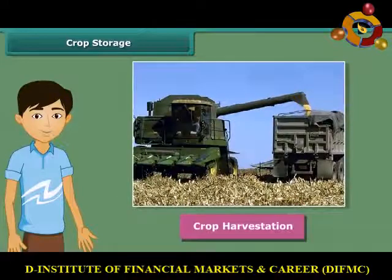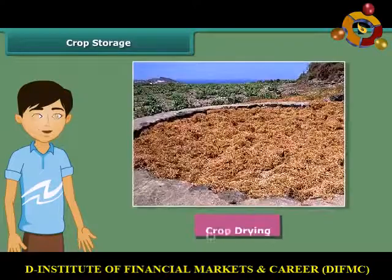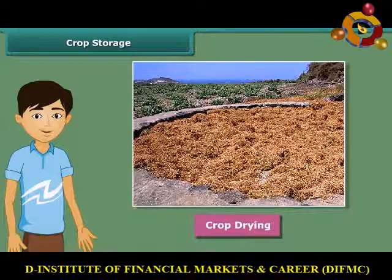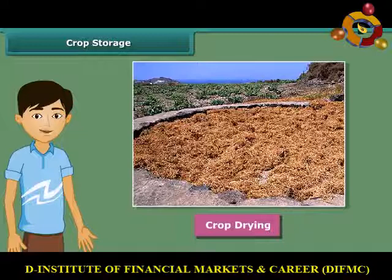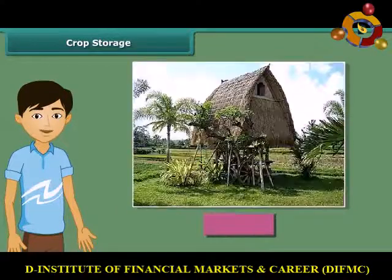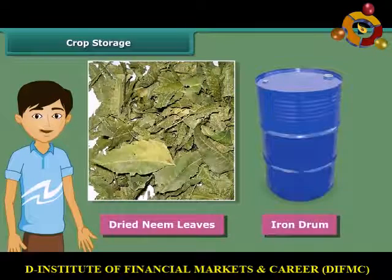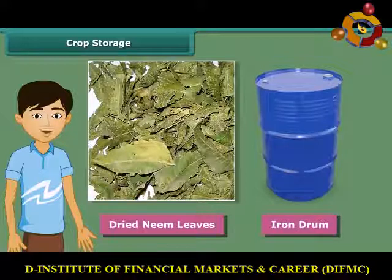Once harvesting is done, crops are stored in huge storages. If the harvested grains are stored without drying, they may get spoiled or attacked by organisms and thus lose their germination capacity. So the grains should be properly dried in the sun to reduce moisture. Farmers store grains in jute bags or metallic bins, but for large-scale storage they use silos and granaries. People also keep dried neem leaves in iron drums for storing food grains, as these protect the grains from pests and microorganisms.